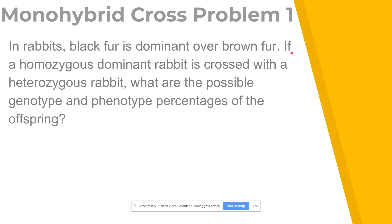The rest of the problem states: if a homozygous dominant rabbit is crossed with a heterozygous rabbit, what are the possible genotype and phenotype percentages of the offspring? The term homozygous — the prefix homo means the same — means that we have two of the same allele. Homozygous dominant means we have two dominant alleles, or two uppercase capital letters. We can also have homozygous recessive, which would be two recessive alleles or two lowercase letters.